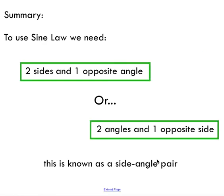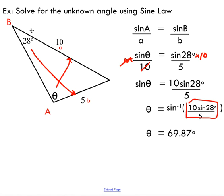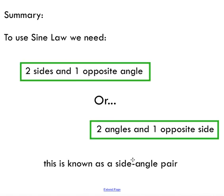So that's the sine law. Just a little summary here, in order to use the sine law, you need two sides and one opposite angle or two angles and one opposite side. And you can see that we did an example of both of those here. We had two angles and one side that we were solving for. We had two sides and one angle. The key here is that your side angles have to be across from each other. This is what we call a side angle pair.